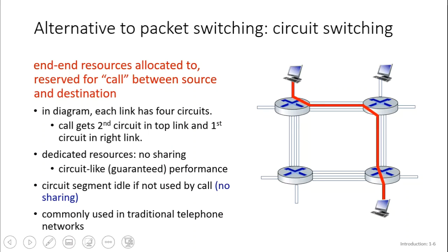With circuit switching, the analogy is that a circuit is basically a dedicated area that the data needs to follow from the sender to the receiver. There's no packet being sent — instead there's a unique road that the data will have to follow to travel. We basically have two computers, computer A and computer B, with switches here, and each switch has a link.